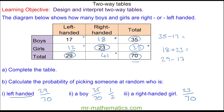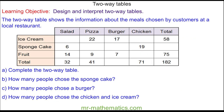Let's try one more question. This two-way table shows information about the meals chosen by customers at a local restaurant. Do you want to try and complete questions A to D yourself? Pause the video and you can resume it when you're ready.